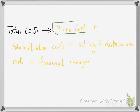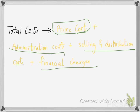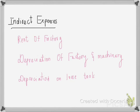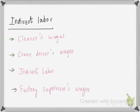Administration cost, selling and distribution cost, and financial charges don't directly link with the manufacturing account. There's also indirect cost, which is made up of indirect expenses, indirect labor, and indirect material. Under indirect expenses comes rent of factory, depreciation of factory and machinery, and depreciation on loose tools. Under indirect labor comes cleaners' wages, train drivers' wages, and factory supervisors' wages — these are not directly linked with the product.